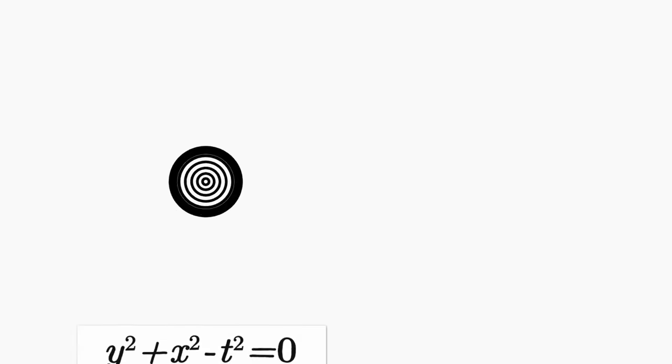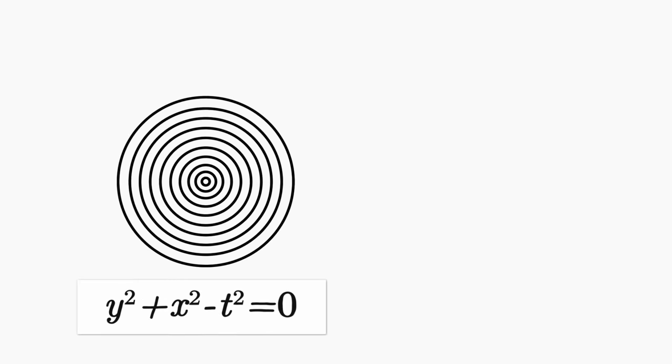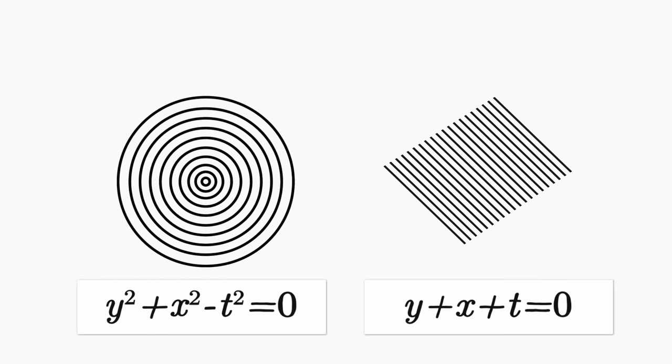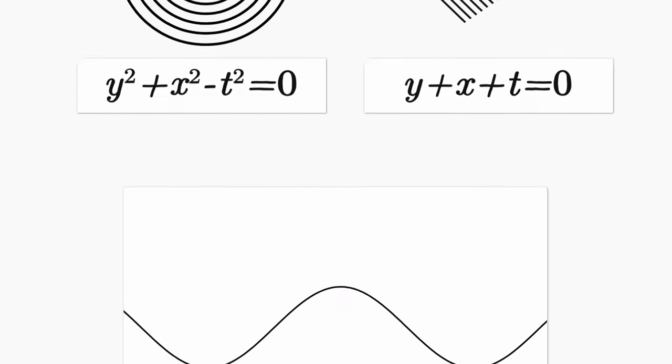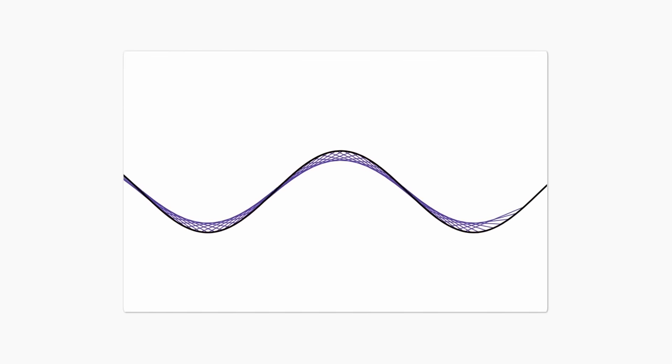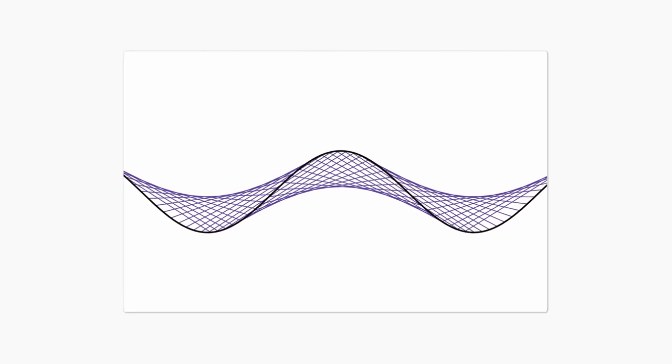Not every family of curves has an envelope. This set of circles, these parallel lines. A family of curves also doesn't have to be made out of lines. They could be sort of wavy things or whatever. You can even have multiple envelopes for one set of curves.